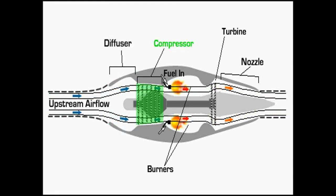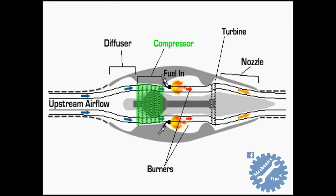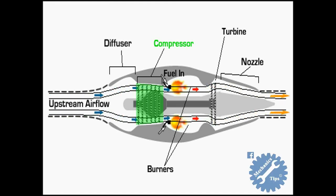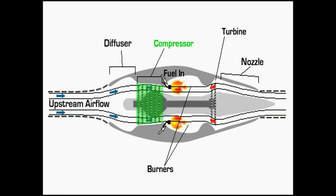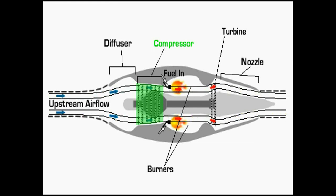The next part is the compressor. The compressor increases the pressure of air flowing into the engine. When the air is pressurized, it is ready to be accelerated out of the back of the engine at high velocity to generate thrust. This pressurization is analogous to the way squid squeeze their mantle cavities in order to eject fluid through their funnels to create thrust.